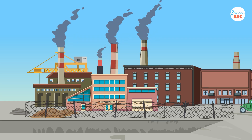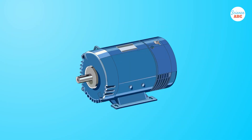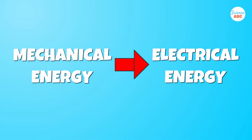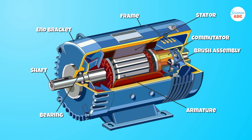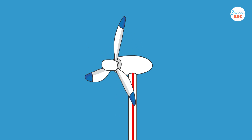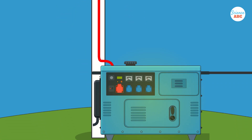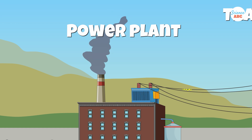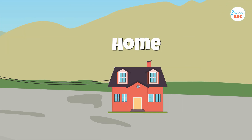Power plants that supply electricity to buildings have massive generators that convert mechanical energy into electrical energy using the principles of electromagnetism. These generators contain magnets and coils of wire. When the turbines spin, as in windmills, the magnets move around and generate a flow of electricity through the coils of wire. This electricity is then distributed to our homes through power lines.